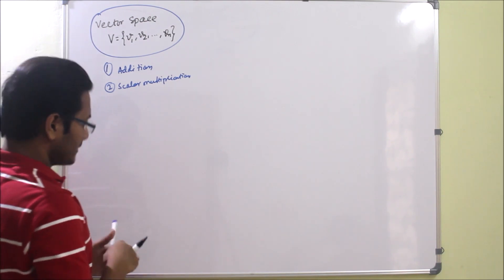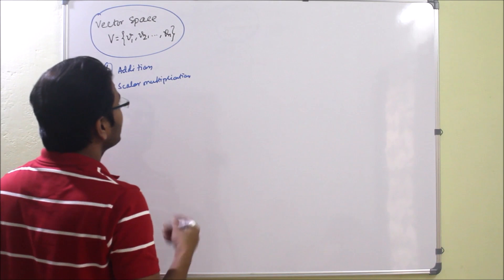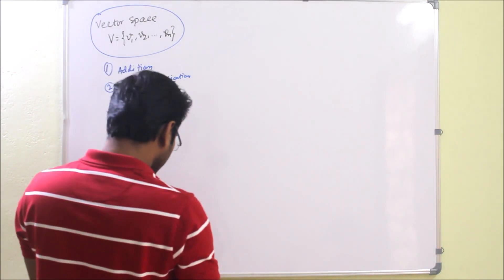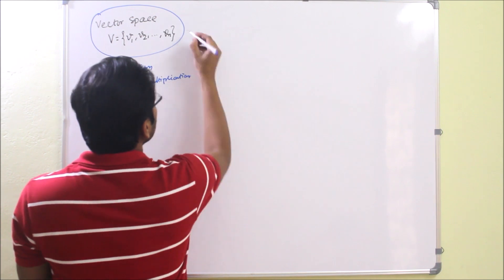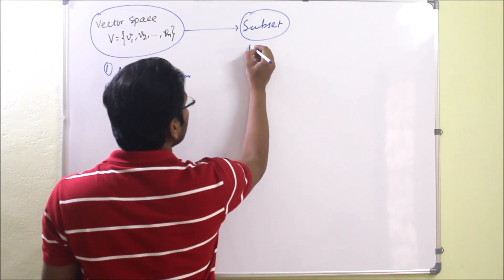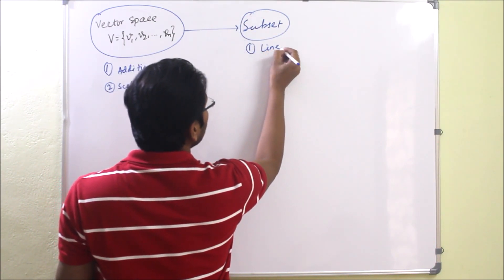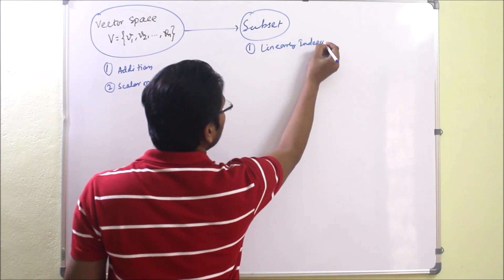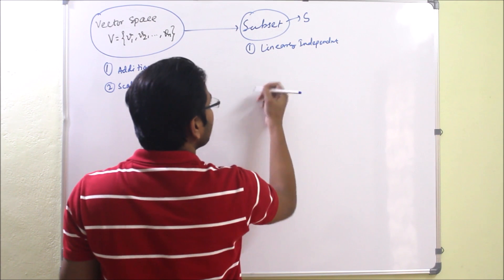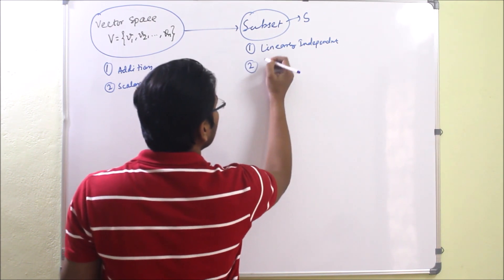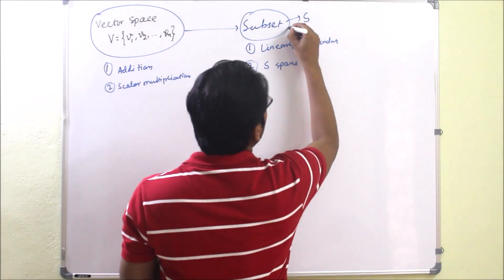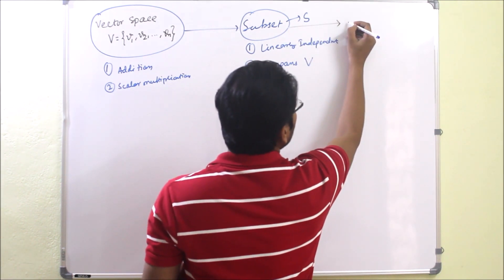A subset of a vector space is said to be a basis only when it satisfies two properties. If we denote this subset as S, the first property is that S must be linearly independent, and the second property is that S spans V. Then this subset is called a basis.